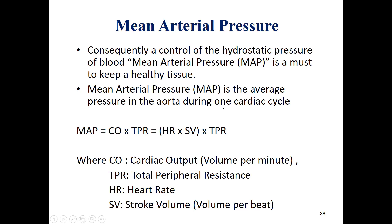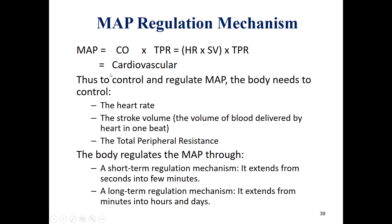The mean arterial pressure is the average pressure during one cardiac cycle. It equals cardiac output multiplied by total peripheral resistance. Cardiac output is heart rate multiplied by stroke volume, where stroke volume is the volume per one beat. To control the mean arterial pressure and consequently achieve good perfusion, we need to control the heart rate, stroke volume, and total peripheral resistance. The body regulates MAP through short-term and long-term regulation mechanisms.